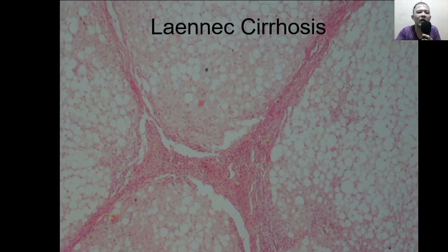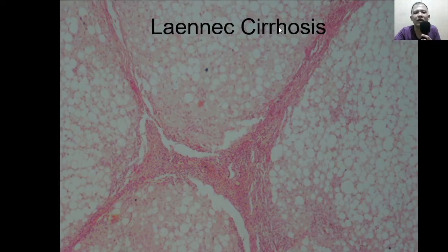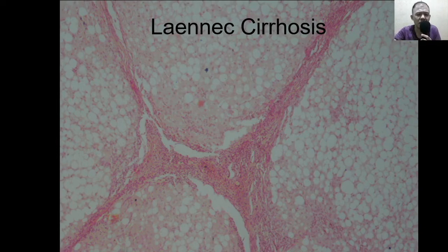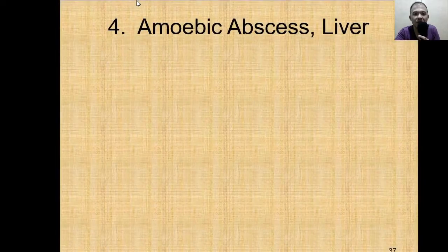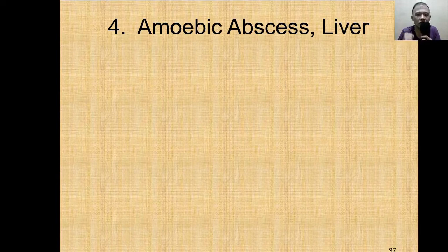Nodules that measure less than 3 mm are called micronodular cirrhosis, also called Laennec cirrhosis. This is more often than not found in alcoholic cirrhosis — not all micronodular cirrhosis is caused by alcoholism, but it is more commonly found in alcoholic liver. In cirrhosis you see a shrunken liver, pseudolobules, and nodules grossly.